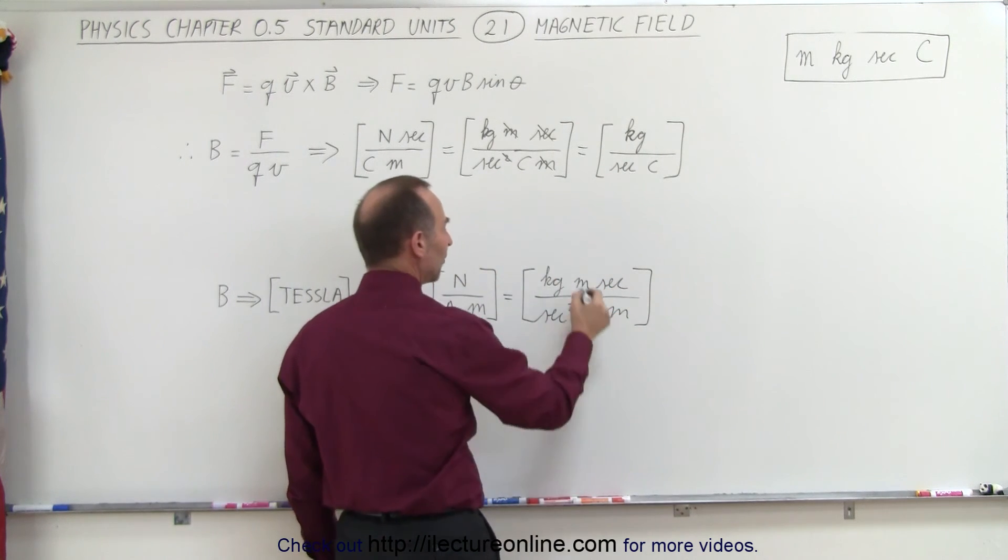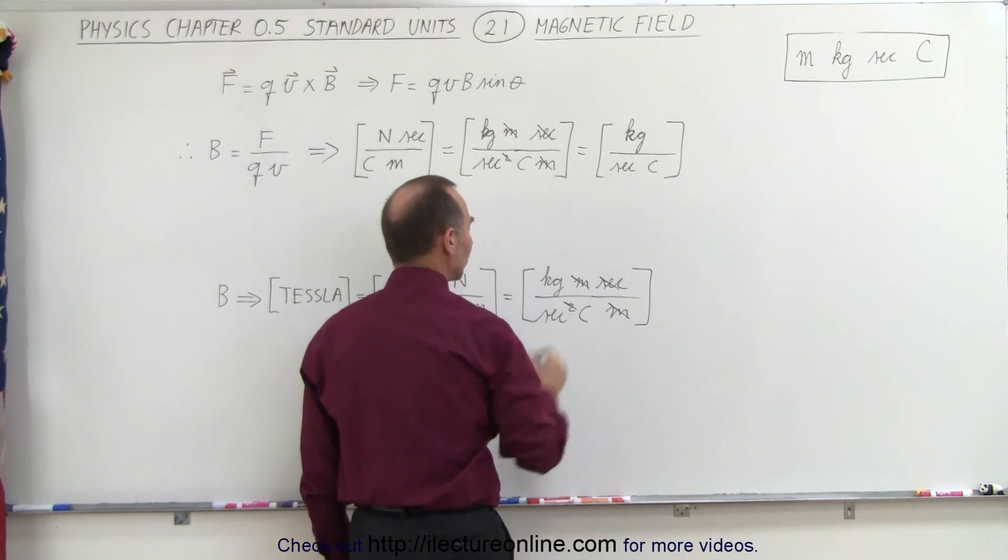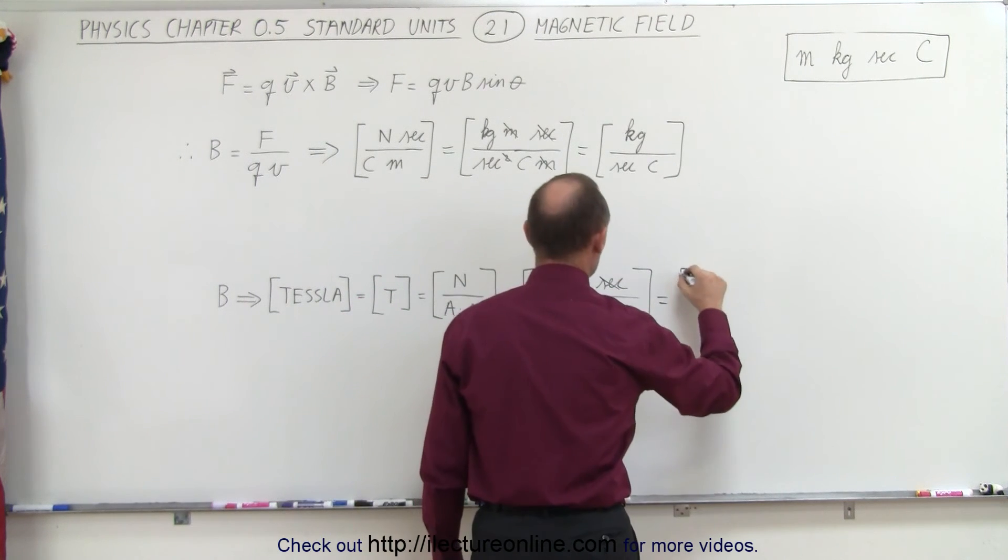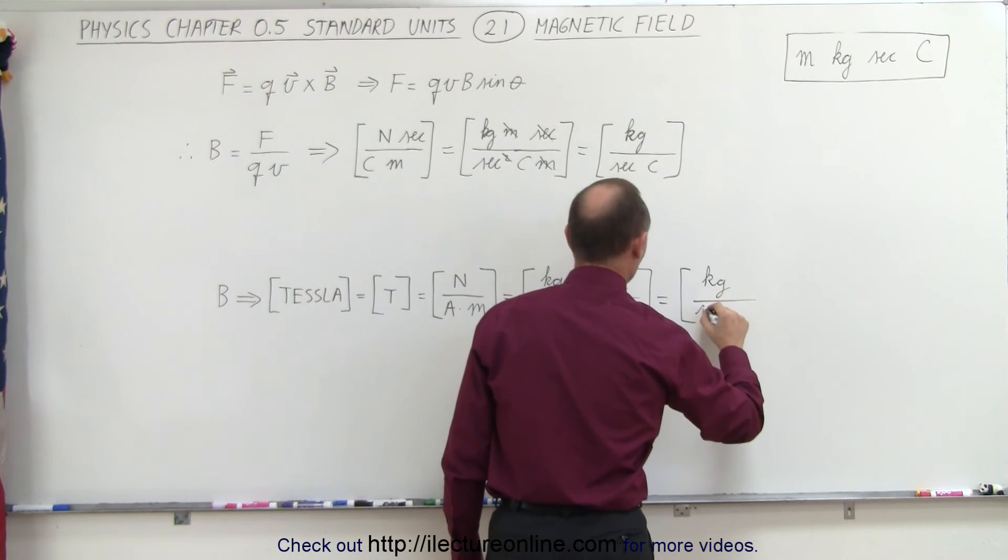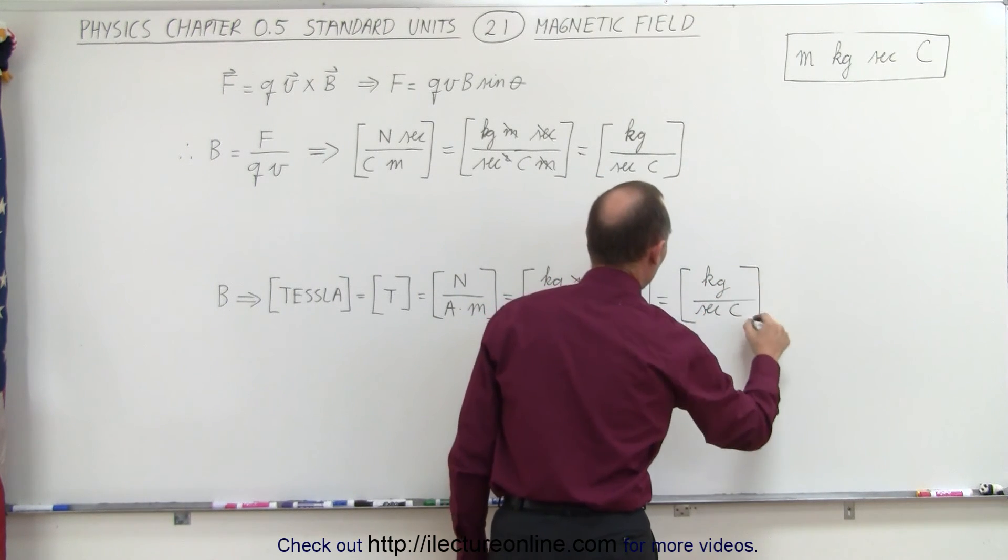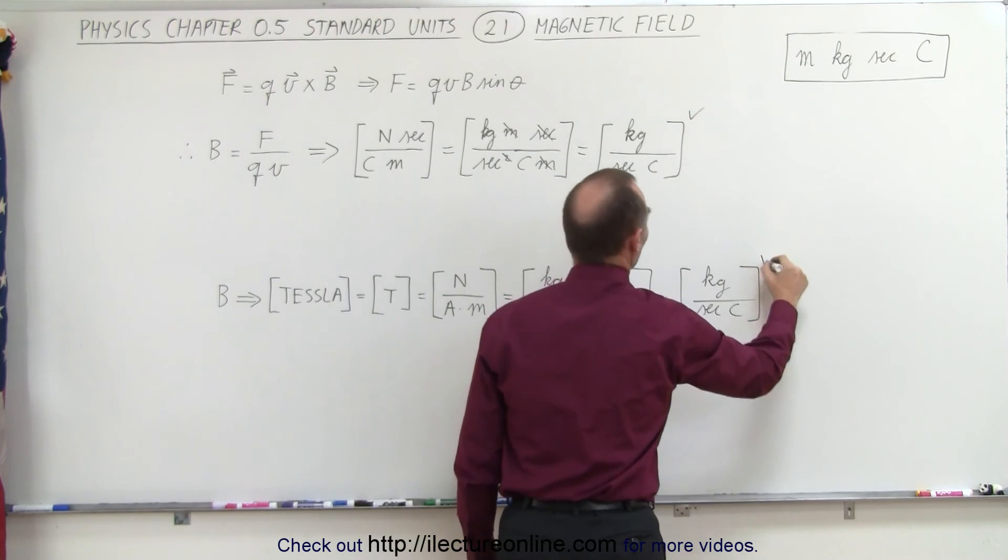Again, when we simplify, the meters cancel out, the seconds cancel out, and we're left with units of kilograms in the numerator, divided by seconds times coulombs in the denominator, which is exactly what we had over there.